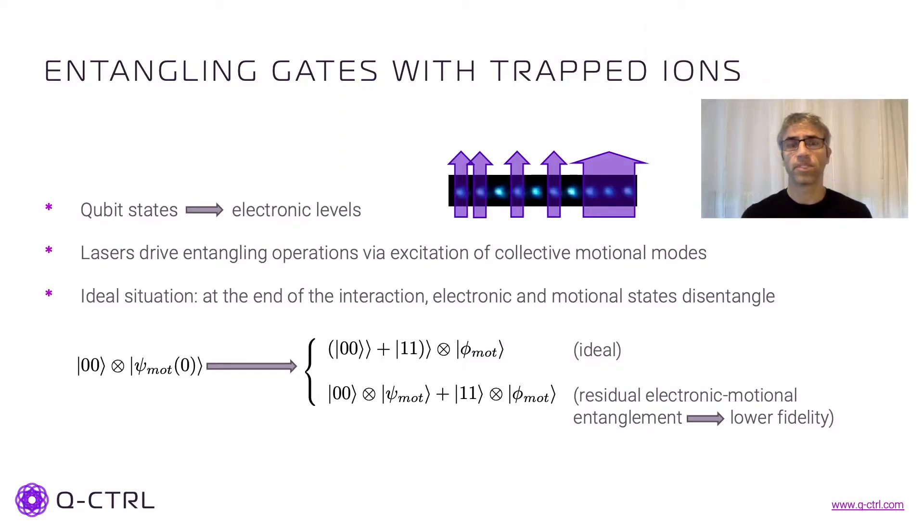So let me start describing the system. Our qubits are going to be represented by the electronic levels of the ions. Those ions are sitting in this linear configuration as a result of the trapping potential and the repulsive Coulomb interaction between them.